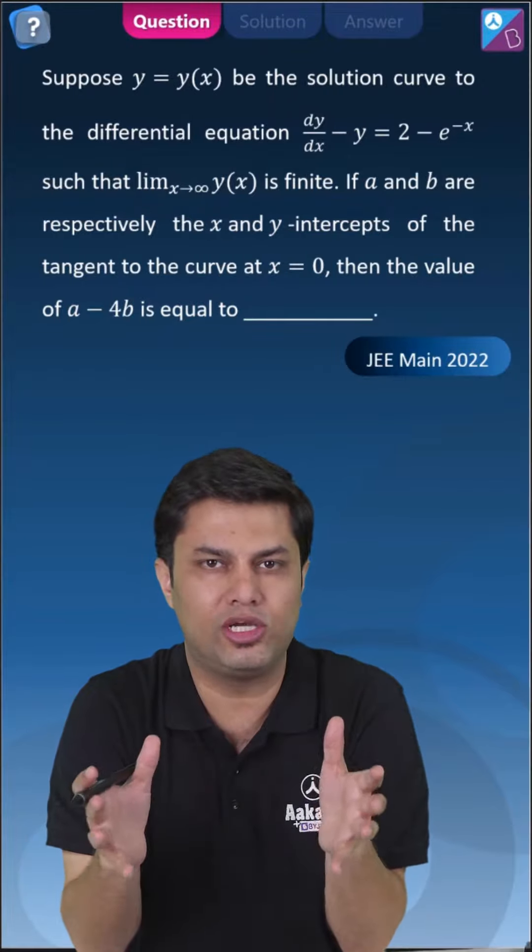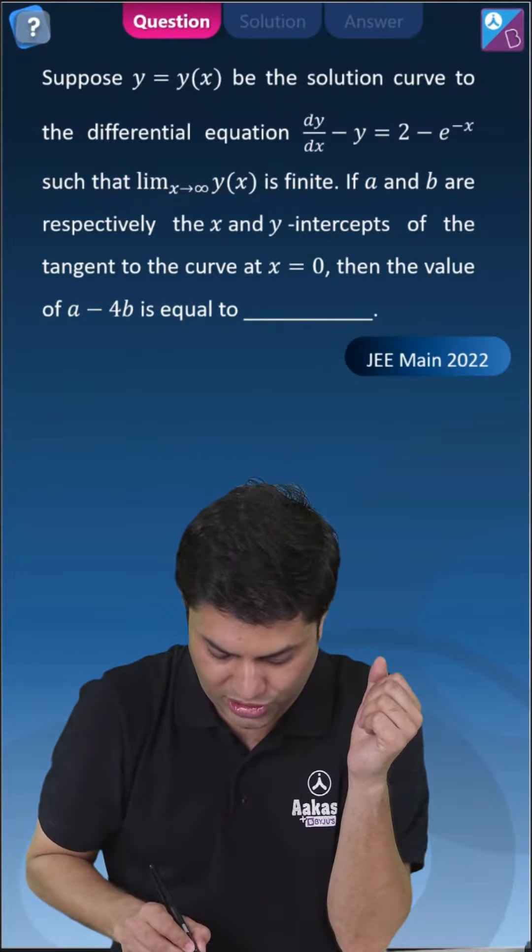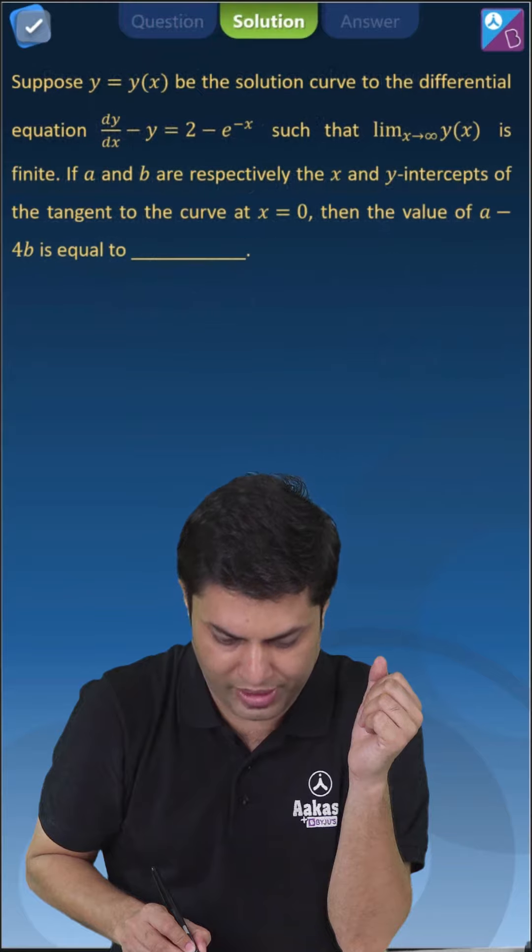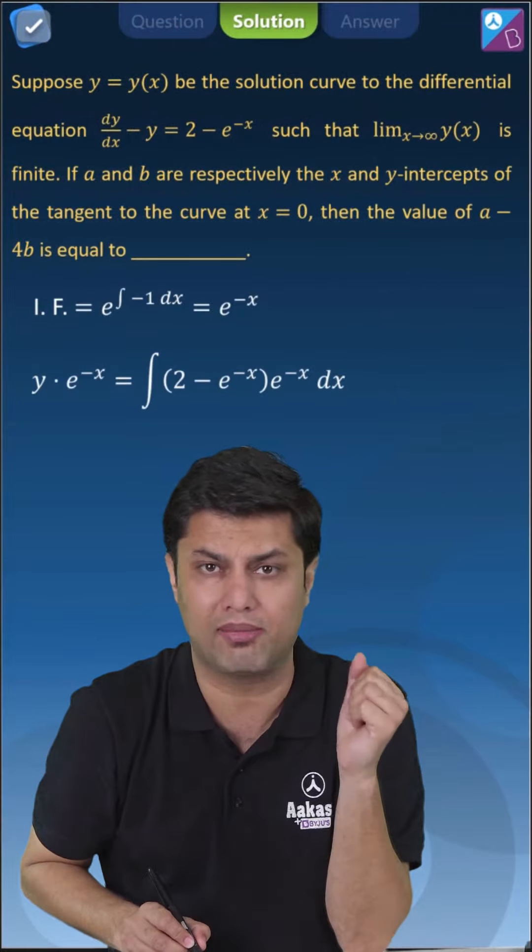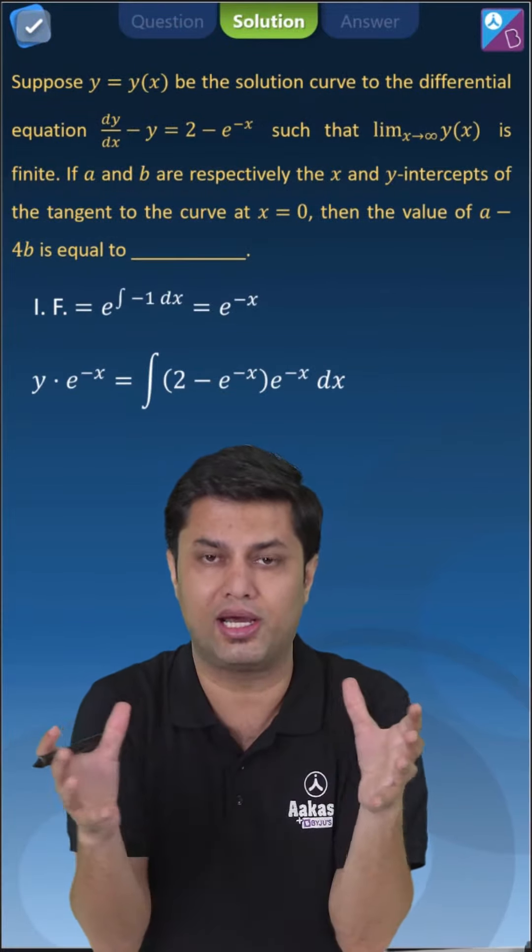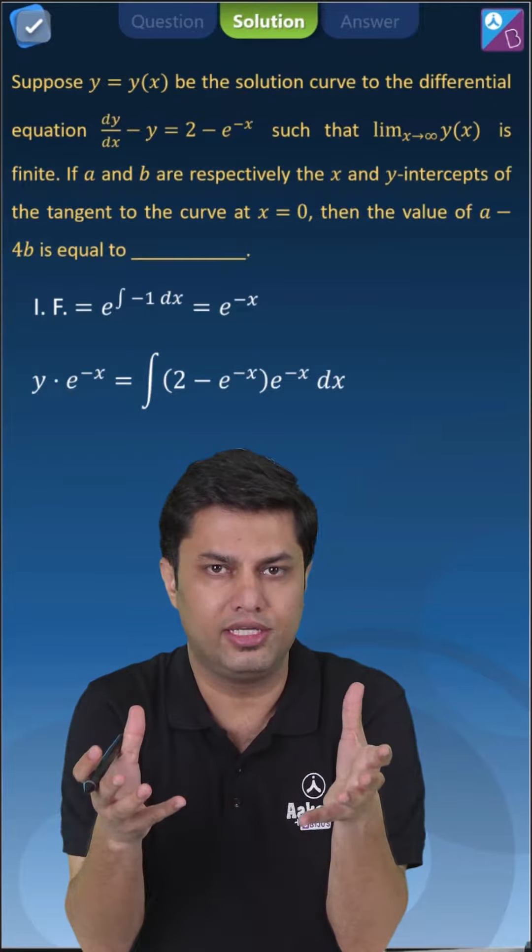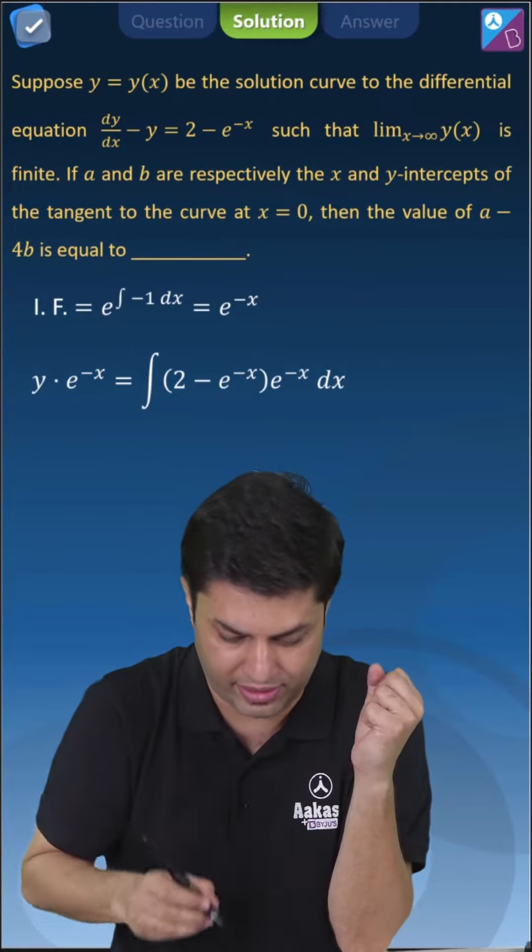So let's see. Clearly, the differential equation is a linear differential equation. So here we will use integrating factor which is e to the power minus x. And the solution is y times integrating factor equals integration of right function times integrating factor.